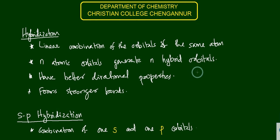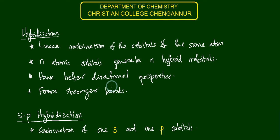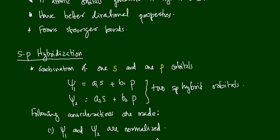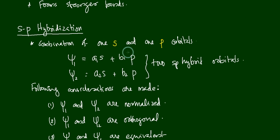Today we are going to look into the quantum mechanical treatment of hybridizations. Hybridization in quantum mechanics is a linear combination of the orbitals of the same atom. If n atomic orbitals are taking part in hybridization, the linear combination of n atomic orbitals of the same atom will result in n hybrid orbitals. These hybrid orbitals have better directional properties compared to atomic orbitals and form stronger bonds. We are considering SP hybridization first — the combination of one S and one P orbital from the same atom.